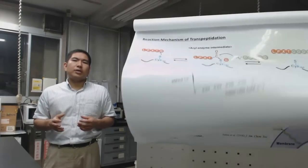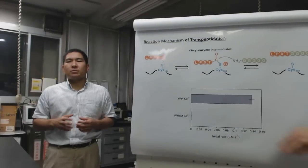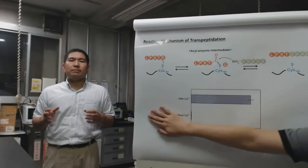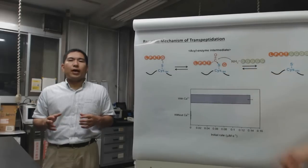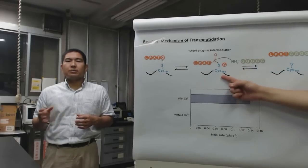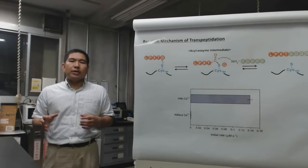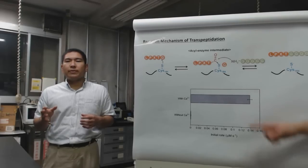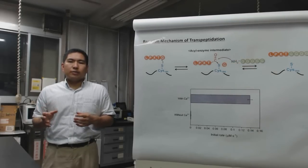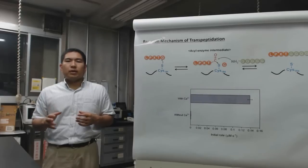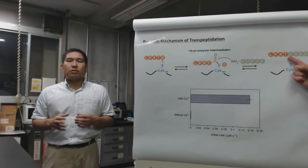The enzyme recognizes the LPXTG motif and creates a peptide bond between threonine and glycine to form an acyl enzyme intermediate at the active site. The intermediate is resolved by nucleophilic attack from the amino group of polyglycine to generate a peptide bond between threonine and polyglycine.